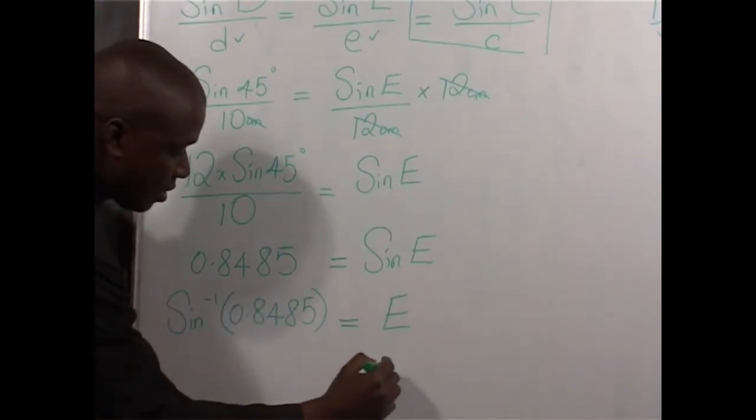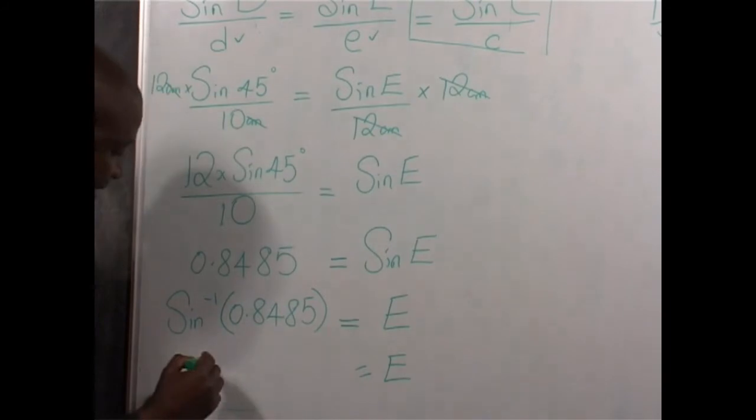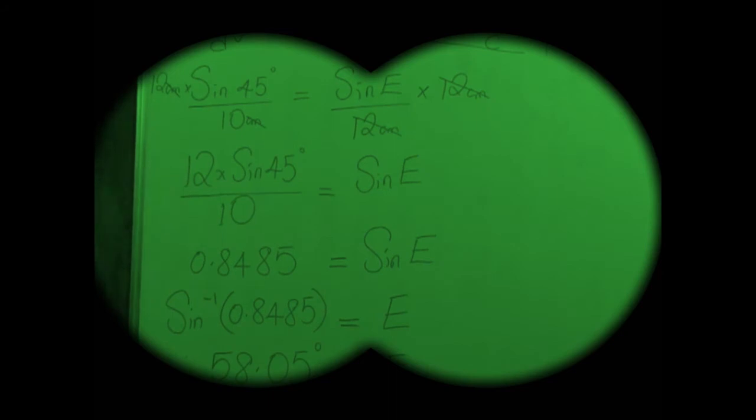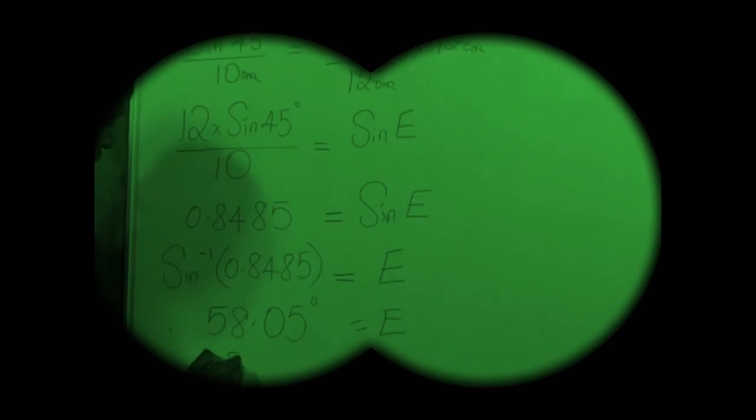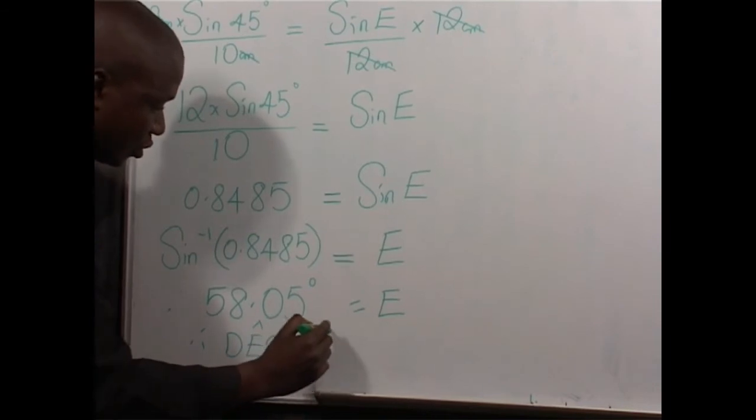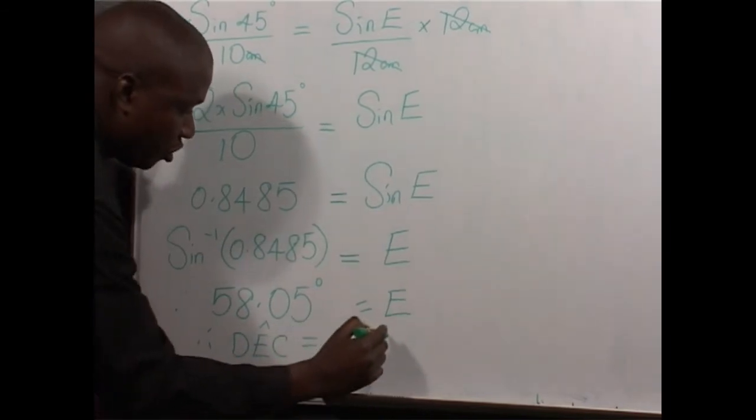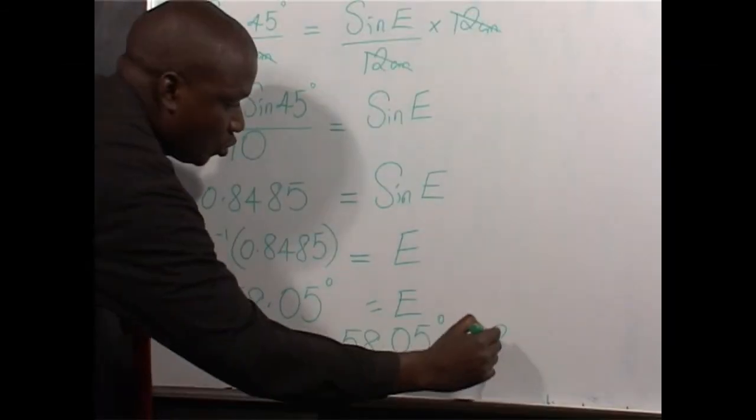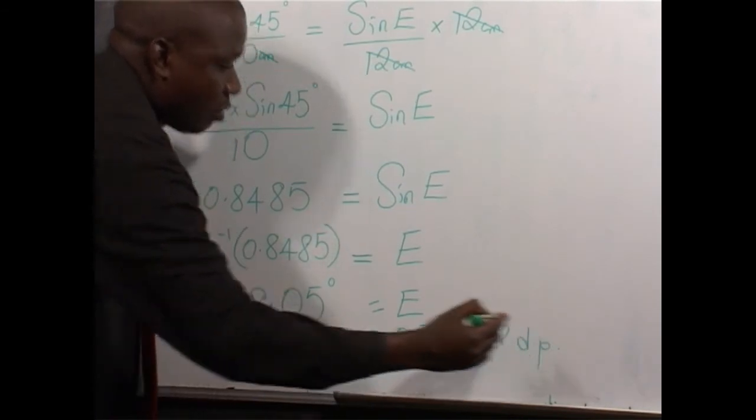E is going to come out as 58.05 degrees to two decimal places. At this point, we can now conclude and indicate that the angle DEC is equal to 58.05 degrees, that is to two decimal places.